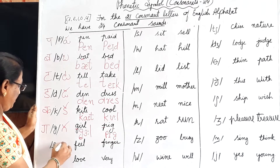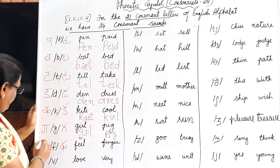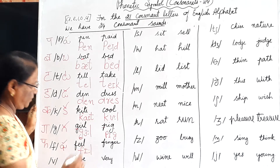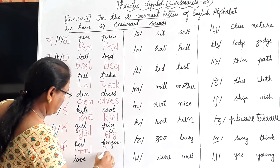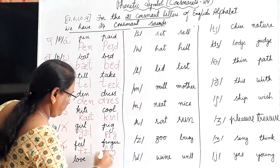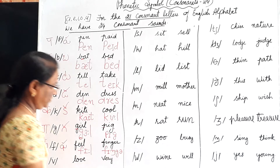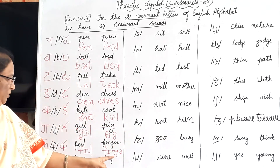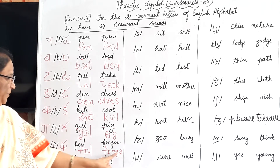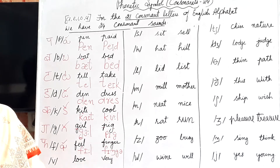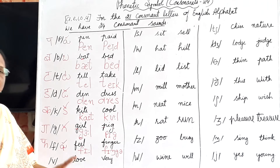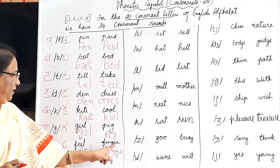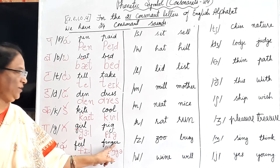F gives the /f/ sound. Feel, finger. This is the /ŋ/ (ing) sound at the end of finger — I will explain this later. G is as it is. Now, 'finger' — it is not 'finger,' it is 'fɪŋgə.' When a vowel occurs in front of R, that R is silent.